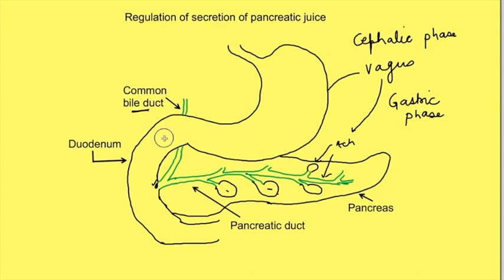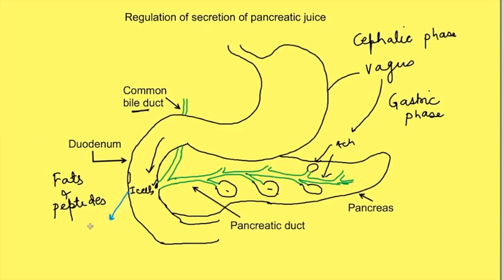When chyme enters the duodenum, the contents of the chyme — especially fats and peptides — stimulate I cells of the duodenum, which release CCK (cholecystokinin) into the blood. Also, the pH content of the chyme causes stimulation of S cells of the duodenum, which releases secretin into the blood.